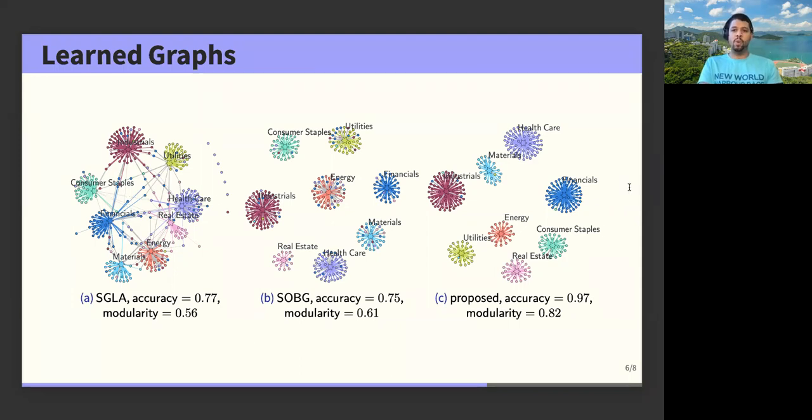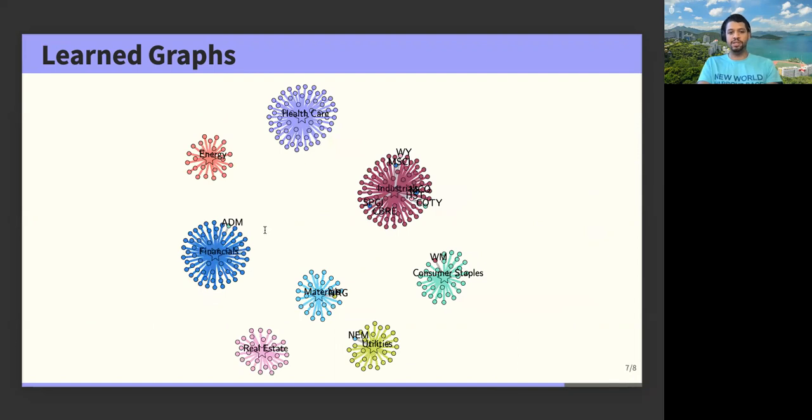Now let's see where our proposed graph diverges from the industry standard. For example, as we can see here in the financial cluster, we see that ADM, which is a company originally classified as consumer staples by GICS, is classified as a financial company by our proposed method. Now, if we dig deeper into the fundamentals of ADM, we will see that they also engage in financial activities such as commodities trading. So it makes perfectly sense that it could also be classified as a financial company.